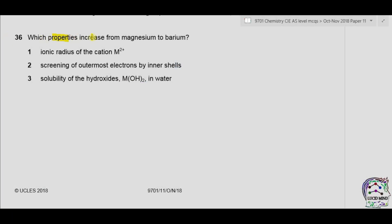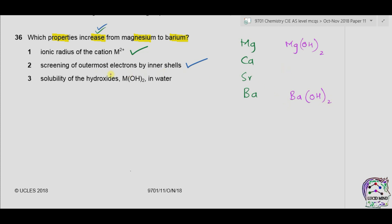Question 36: which properties increase from magnesium to barium? First, the ionic radius of cation M²⁺ increases — in every period a successive shell is added, so the size of the cation increases with the number of shells. Correct. Second, screening of outermost electrons by inner shells also increases — screening depends on the number of shells between the nucleus and the outermost electron, and that number increases going down the group. Correct. Third, solubility of hydroxides in water — magnesium hydroxide is less soluble than barium hydroxide, as solubility of group 2 hydroxides increases down the group. Correct. All three are correct, so the answer is A.